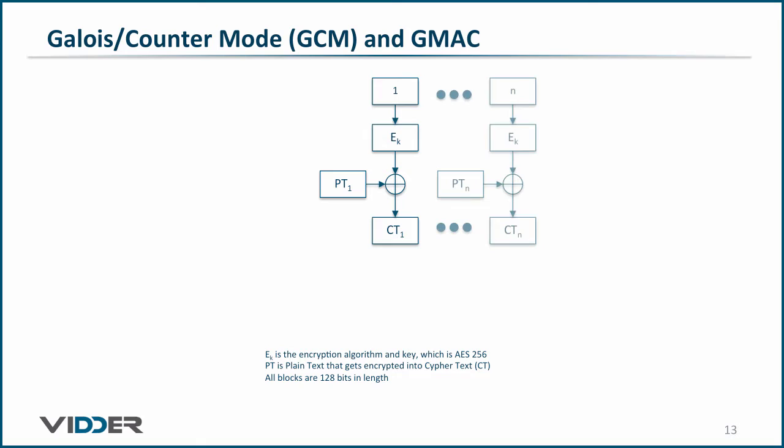This process is continued for all n blocks of plain text, with the n blocks of ciphertext being the output we are looking for.